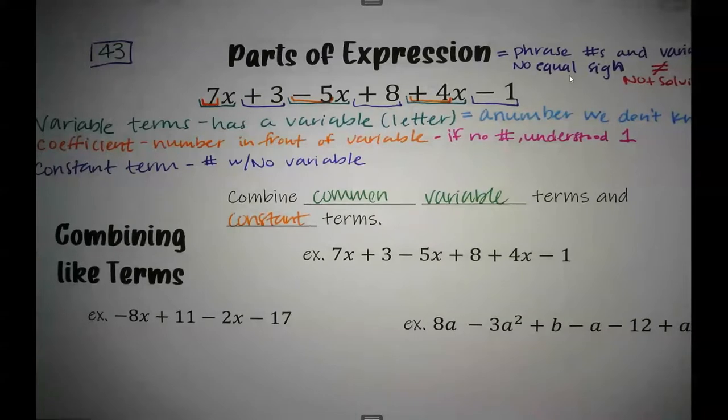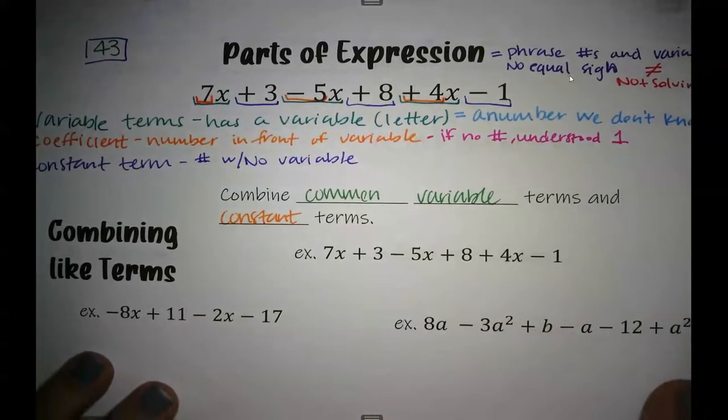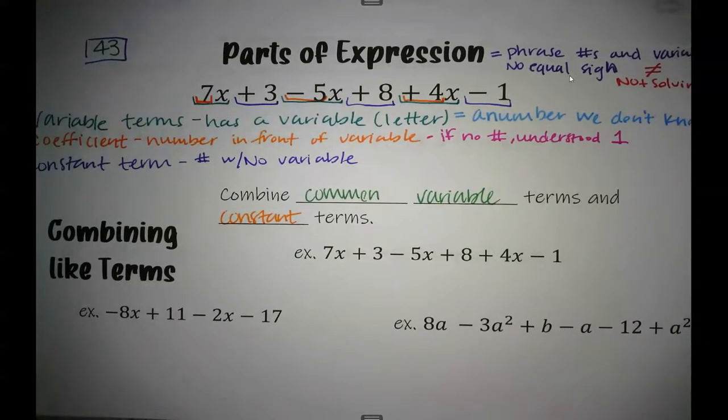So for this example from above, let's combine our like terms. I'm going to underline the like terms in different colors, starting with my variable terms.